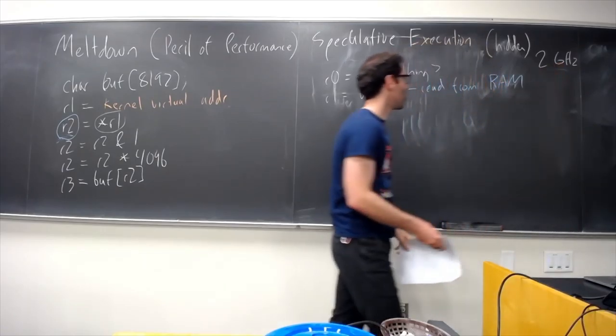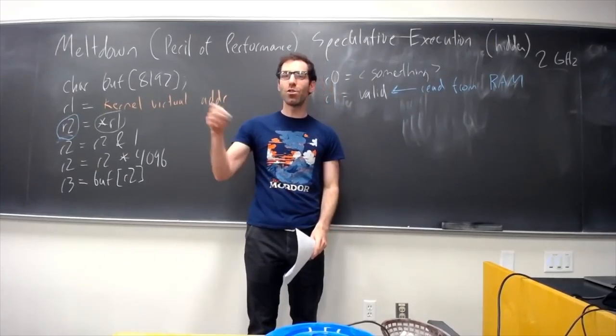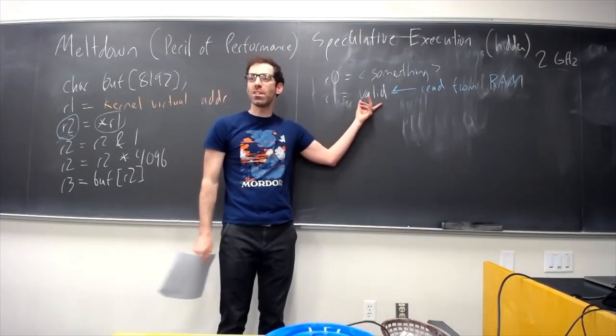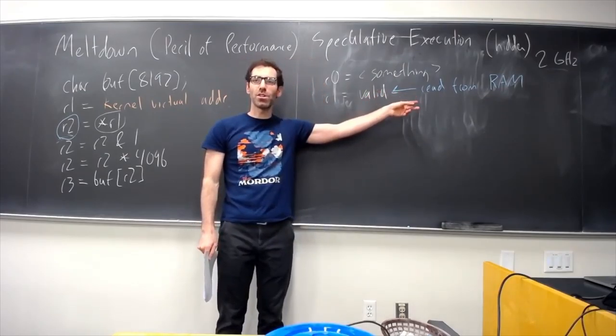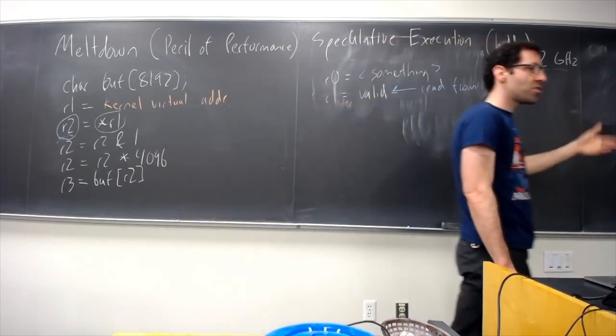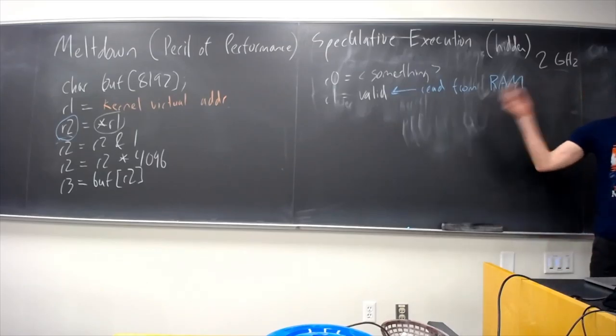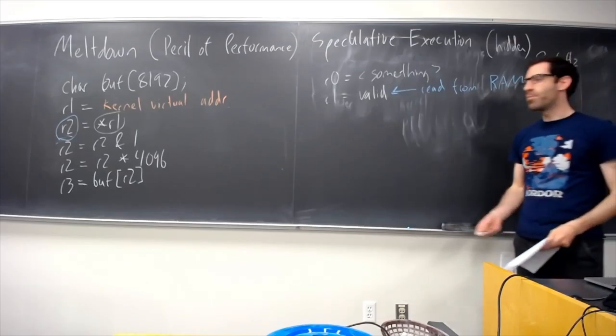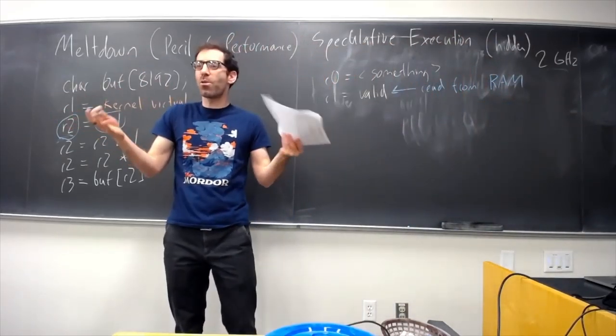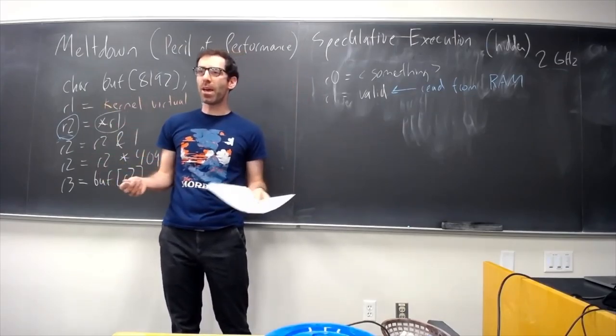So, we have something like 200 clock cycles. Kind of, 200 instructions that we could be executing that we might just have to wait for this information to come back. But, processors, they're a competitive market. Customers are always wanting better performance. So you gotta, you just can't afford to wait. Like, 200, you can't just, like, sit around and wait for 200 clock cycles while you're waiting for this data. You gotta be doing something that might pay off.